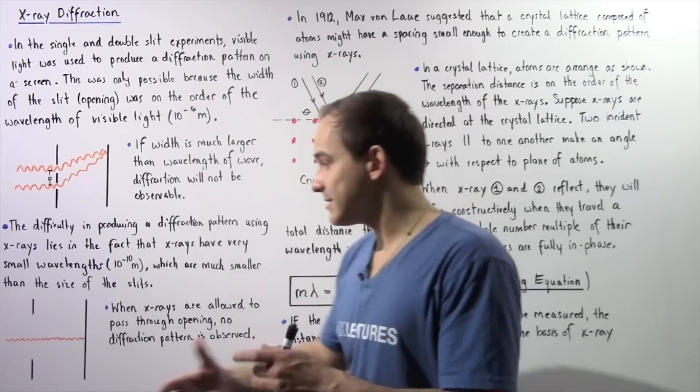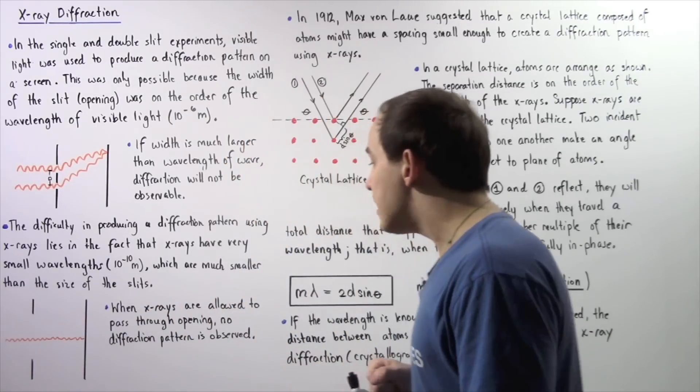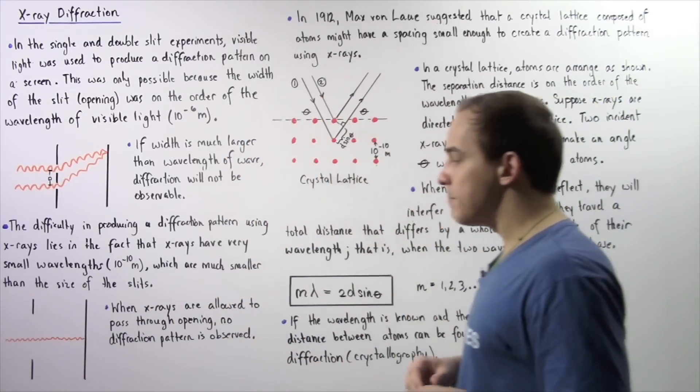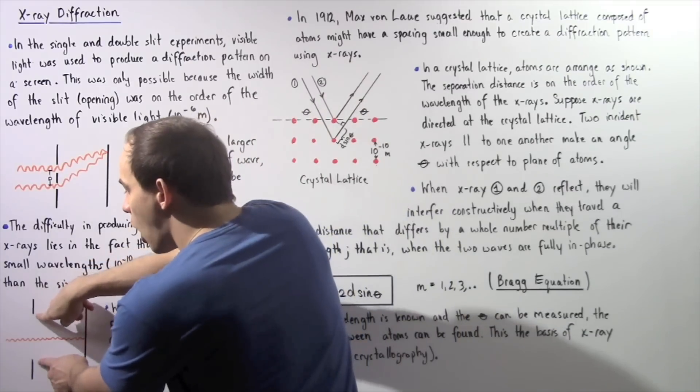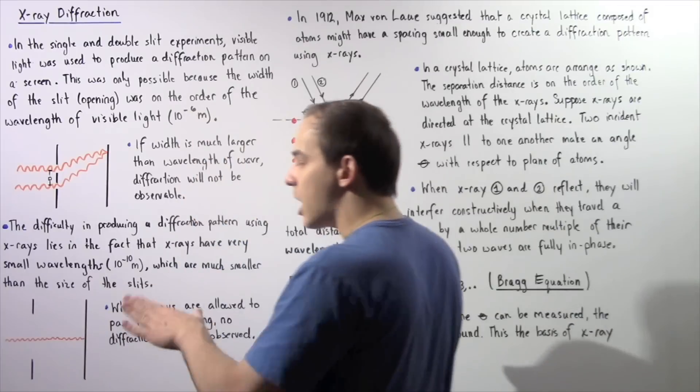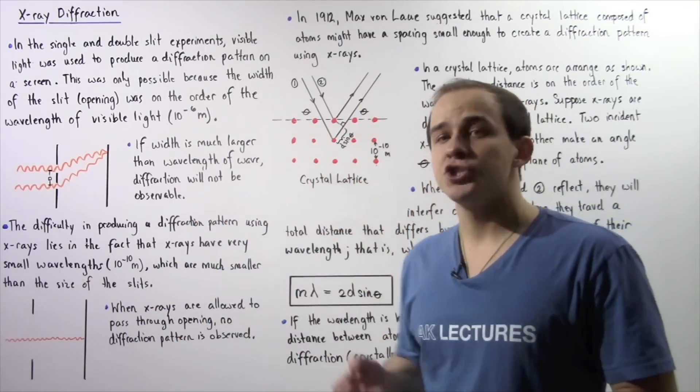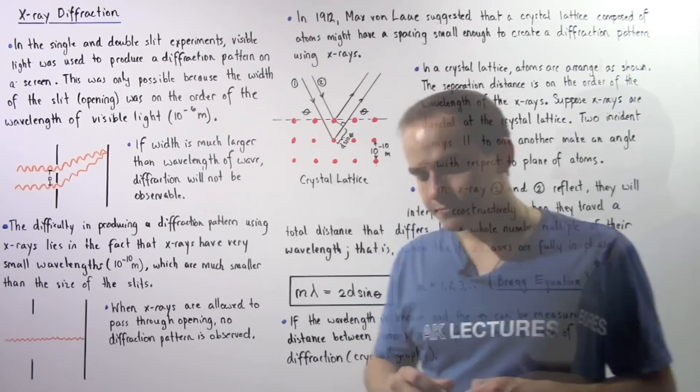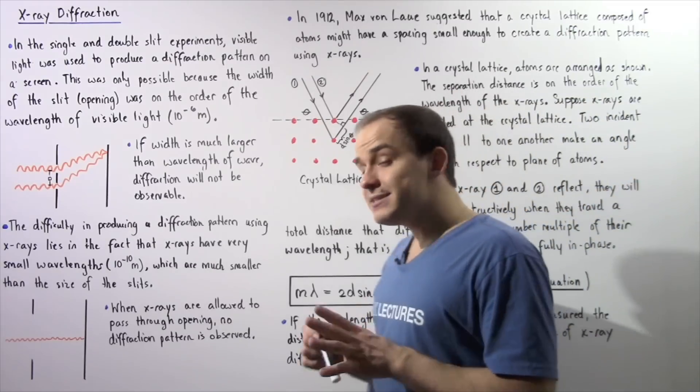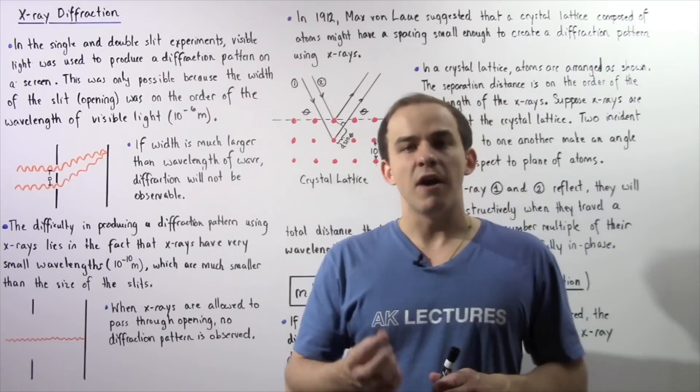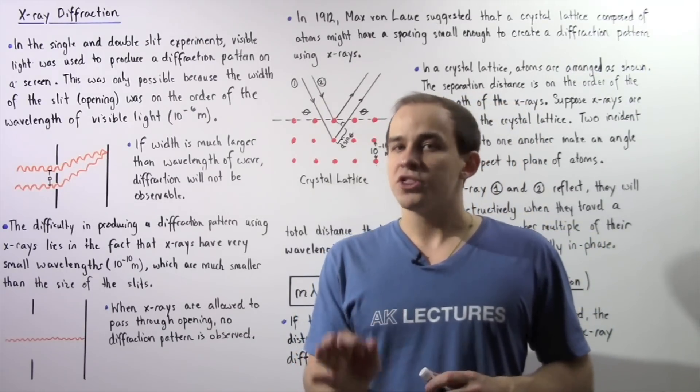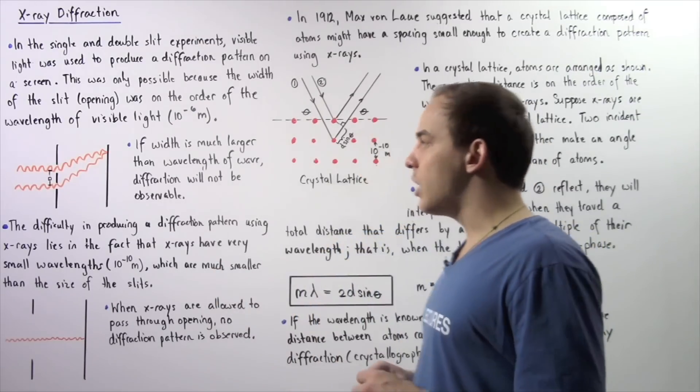Basically, when scientists took those X-rays and allowed them to pass through the openings, these openings were so large compared to the wavelength of those X-rays that no diffraction actually took place. In the year 1912, a German physicist by the name of Max von Laue came up with a clever solution to this problem.